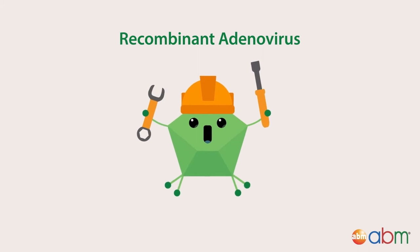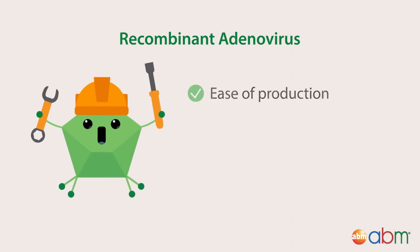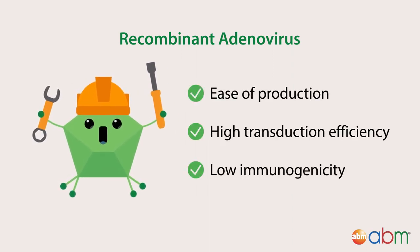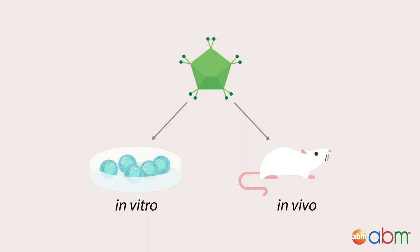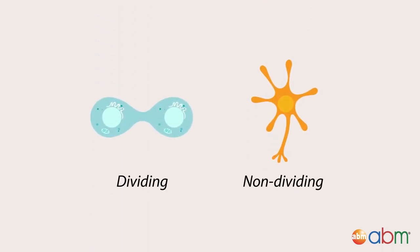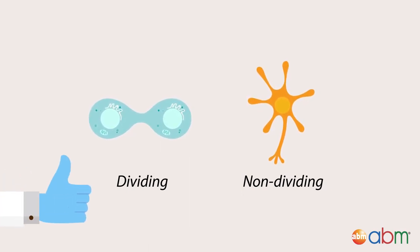Recombinant adenoviruses are wonderful tools for high efficiency gene transfer and gene therapy due to their ease of production, high transduction efficiency, and low immunogenicity. Once generated, a single adenoviral vector can be used in both in vitro and in vivo applications and can infect both dividing and non-dividing cells in a broad range of hosts.